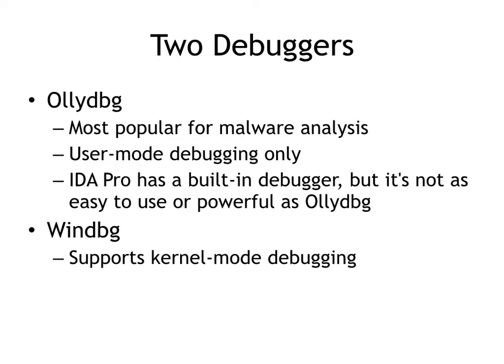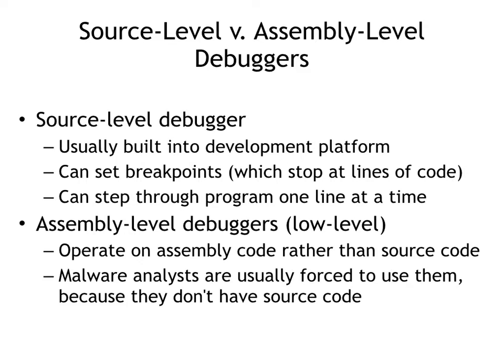We'll use them both here in very basic ways. A source level debugger is what developers use — if you've taken the exploit development class, we did this in the first couple projects where you would save the C code in the same directory, then run GDB and compile with the minus G switch to save symbols.